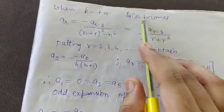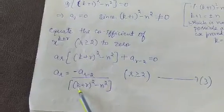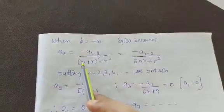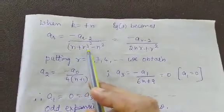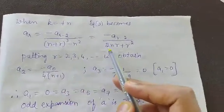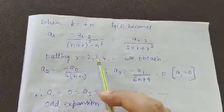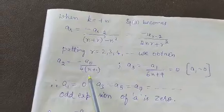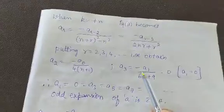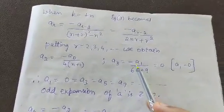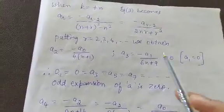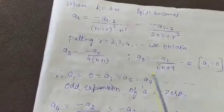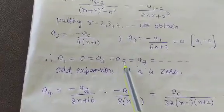Now consider the case k = +n. Equation 3 becomes aᵣ = −aᵣ₋₂ / [(n+r)² − n²] = −aᵣ₋₂ / [r² + 2nr] = −aᵣ₋₂ / [r(r + 2n)]. Substituting r = 2: a₂ = −a₀ / [4(n+1)]. Substituting r = 3: a₃ = −a₁ / [6(n+3/2)·...] = 0, since a₁ = 0.